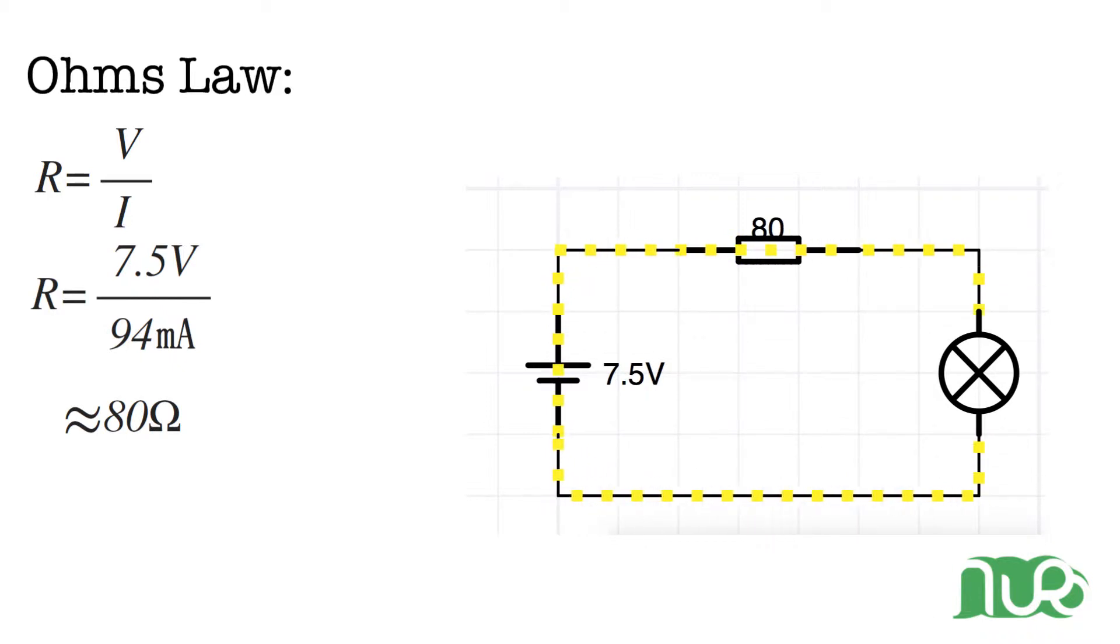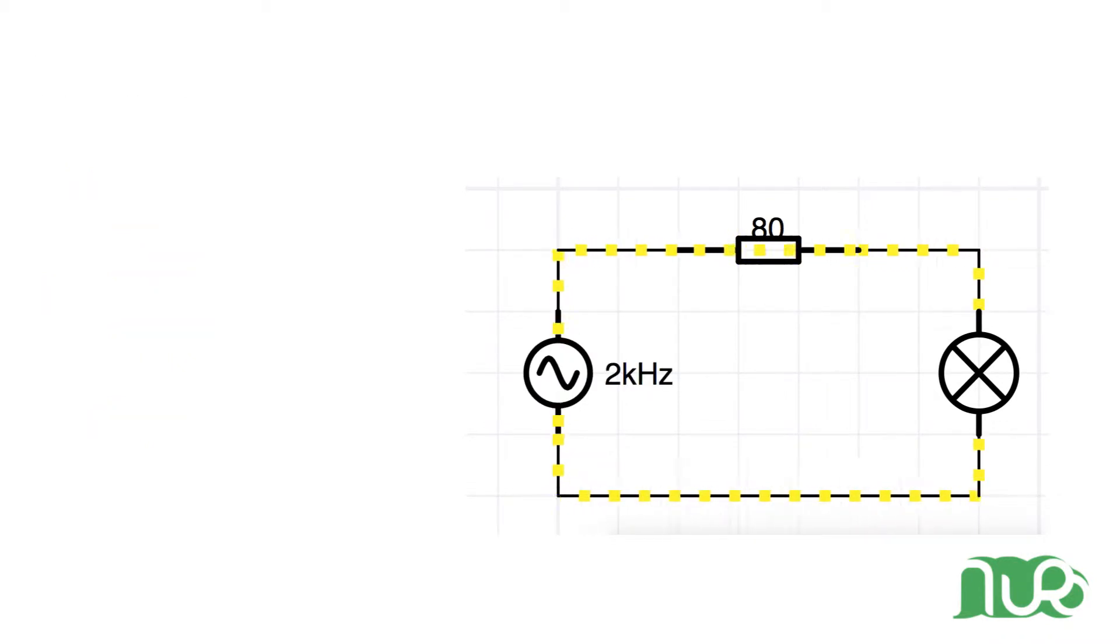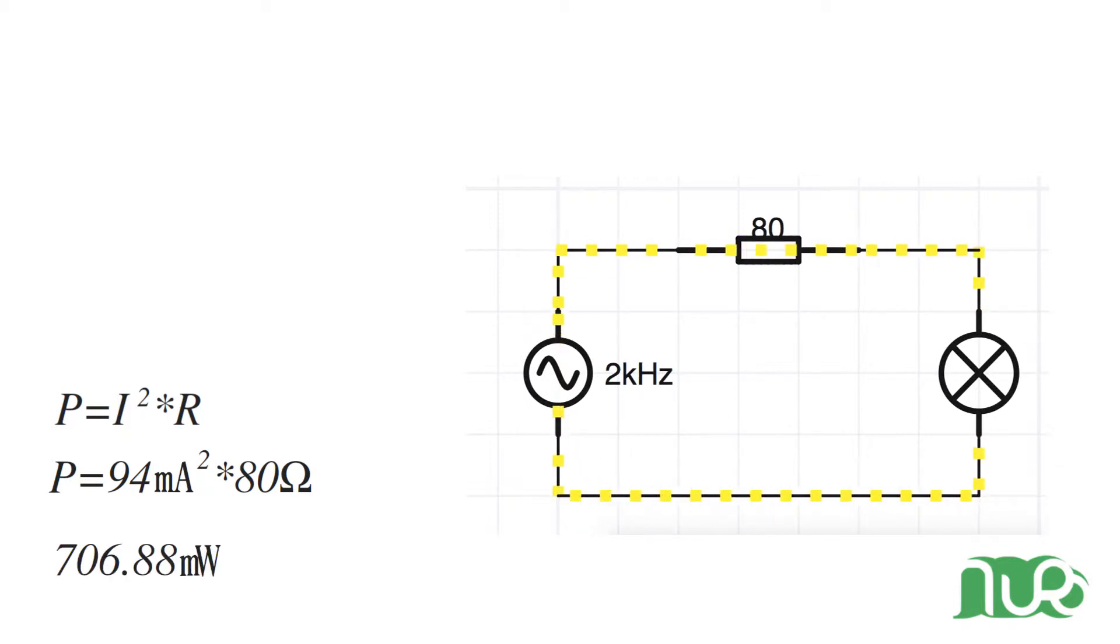Now we can also change to our AC power source and nothing really changes in our circuit so far. However, we can also calculate the power that our resistor dissipates using the usual formula. If we insert our values we see that the resistor has to dissipate over 700mW. It is not very efficient. Can we do it any better? Of course we can!